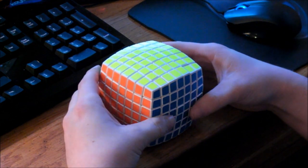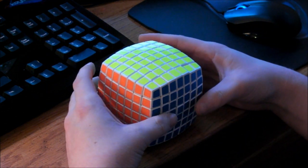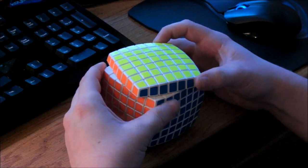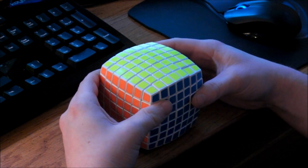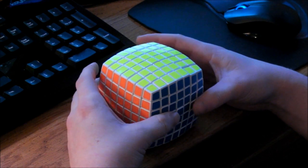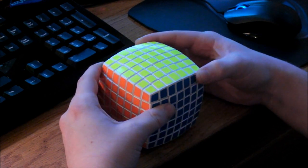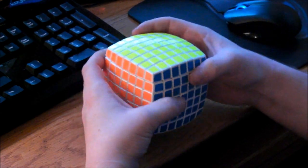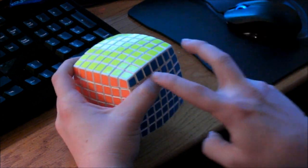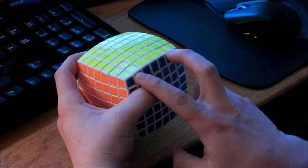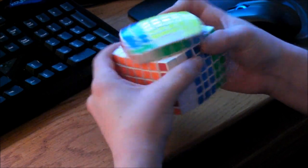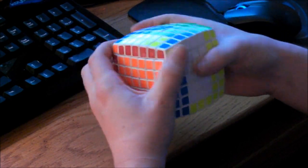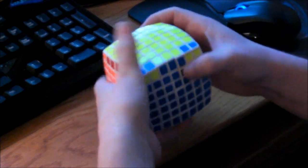And last is on the 7x7. You, again, do not need to do any PLL parities on this, but you do need to do up to three different OLL parities. You can't use Lucas parity, because as with the 5x5, it will switch pieces here. So, if you want to switch these two pieces, you do the second algorithm with only the outer layers. Like that.